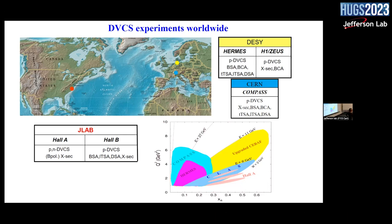Being interactive: JLab is at x above 0.1 and the other experiments are below 0.1 — this means JLab is sampling the valence quark region, while HERMES and COMPASS sample the sea quark region.